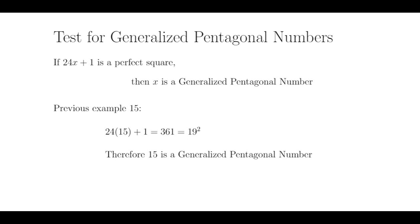We will use our previous example 15. We already showed that 15 is not a pentagonal number because it failed our original test. However, 15 times 24 plus 1 is 361, which is equal to 19 squared, so it is a perfect square. Therefore, 15 is a generalized pentagonal number.